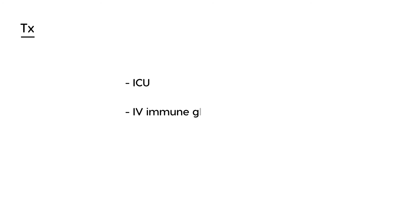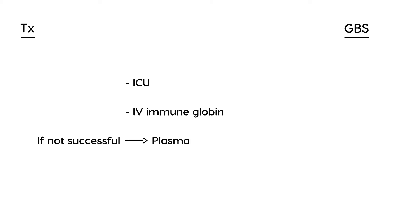Treatment of GBS involves three key elements. First, because of its severity, this requires intensive care unit management — it is a medical emergency involving intubation and complex care. Second, the first-line treatment is IV immunoglobulin. If that is not successful, the last resort is plasma exchange, where blood is drawn and replaced with fresh blood.